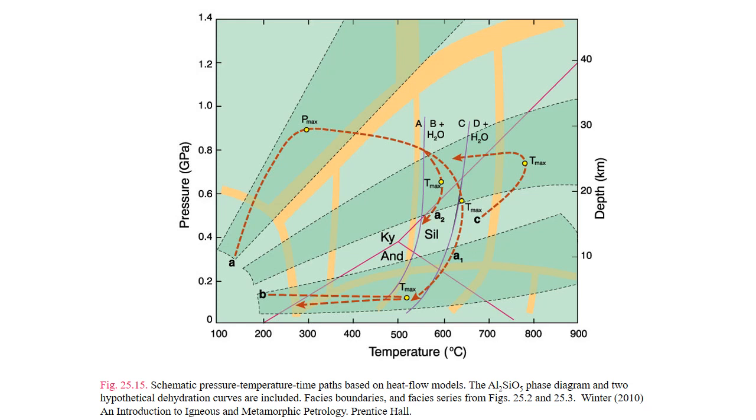Path A is considered to be a typical P-T-t path for an orogenic belt with crustal thickening. During crustal thickening, pressures increase greater than temperature. Because of the time lag during the heat transfer, pressures equilibrate nearly instantaneously, but heat conducts very slowly through the rocks.